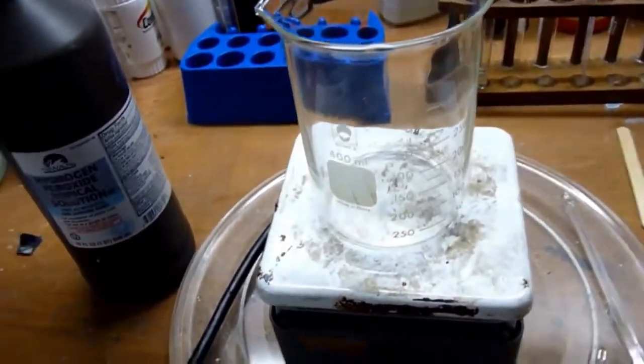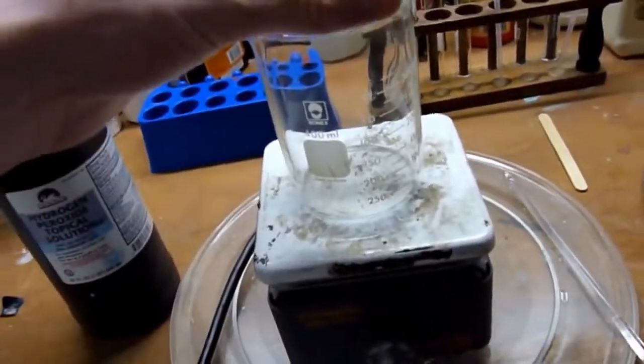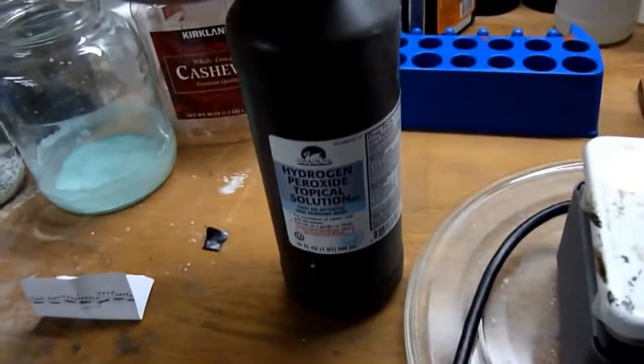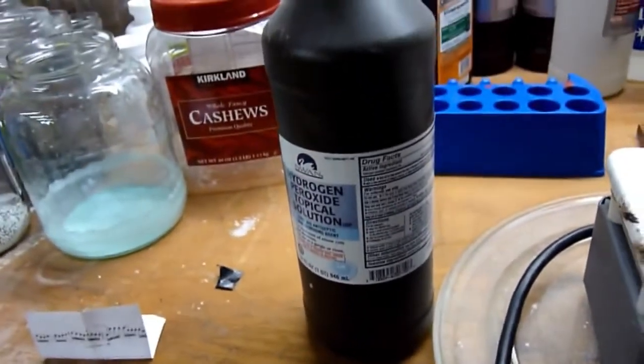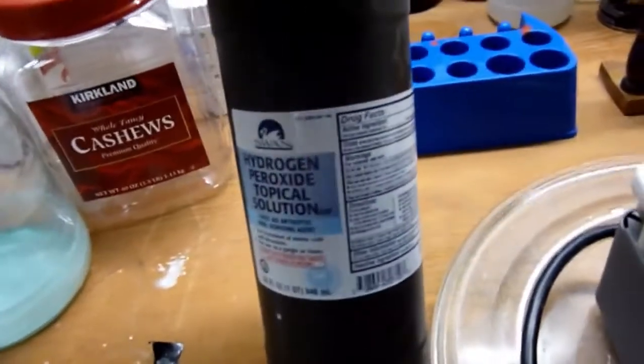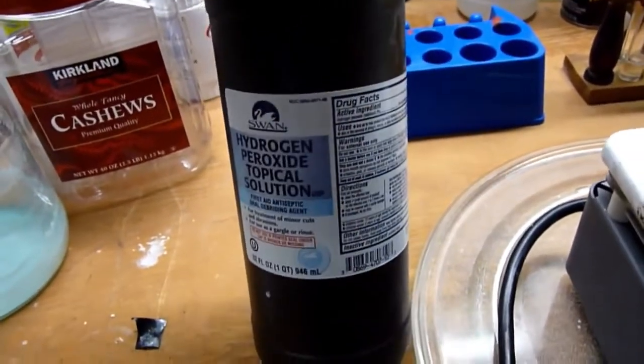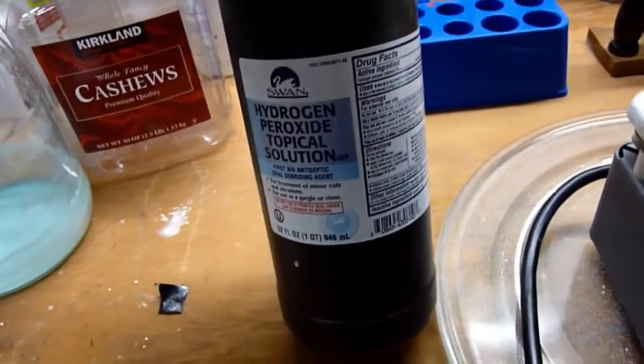We're just going to basically force evaporation by heating it up a little bit. Heating the hydrogen peroxide causes it to decompose. So we can expect some decomposition to happen of hydrogen peroxide into water and oxygen gas. But as long as we keep the heat low enough, the decomposition will not be too much of a problem.